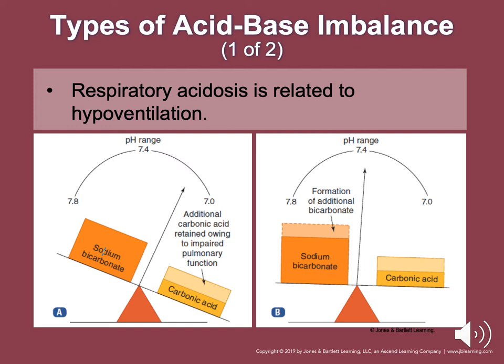Sometimes respiratory alkalosis could be caused by a drug overdose, depending on the drug, fever, anxiety, or bag-valve-mask ventilation. Signs include altered level of consciousness, lightheadedness, paresthesias of the lips, chest tightness, confusion, and vertigo.